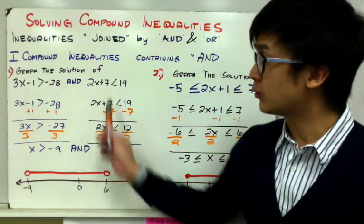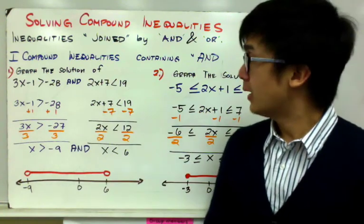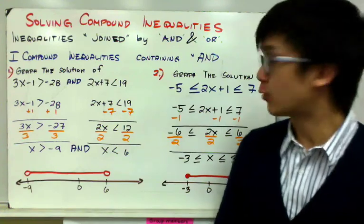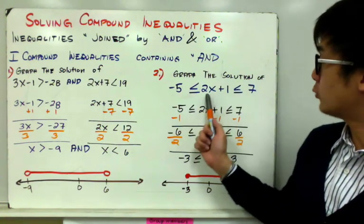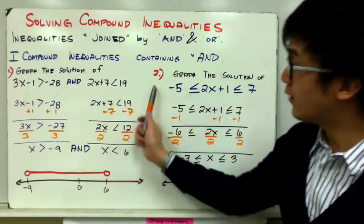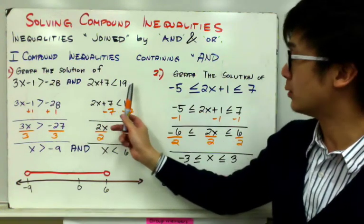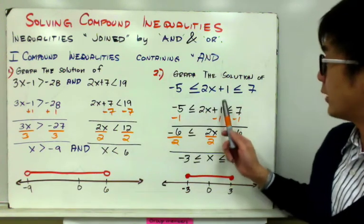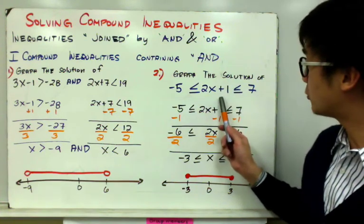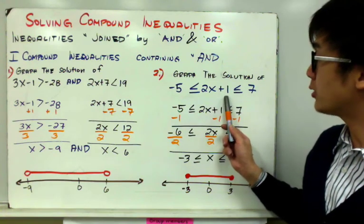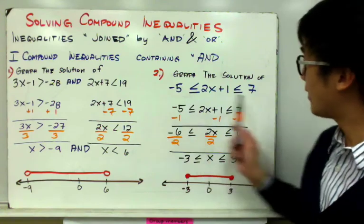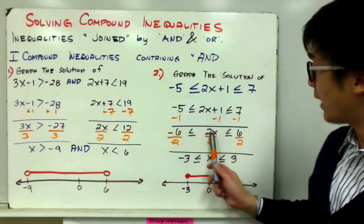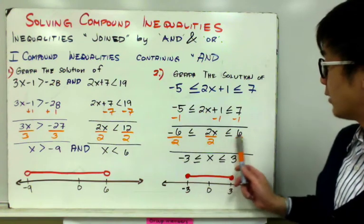It's either an open circle or a shaded circle depending on the inequalities used. Now on example number 2, there's a different way of presenting the AND operation. Graphing the solutions of 2x plus 1 in between negative 5 and 7 is written differently from example 1, but the method and graph are still the same. You need to have x by itself, so you subtract 1 from all parts — subtracting 1 from 2x plus 1, the left side, and the right side — leaving you with 2x between negative 6 and 6.